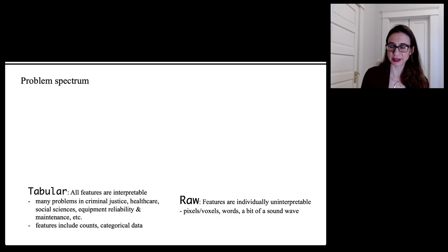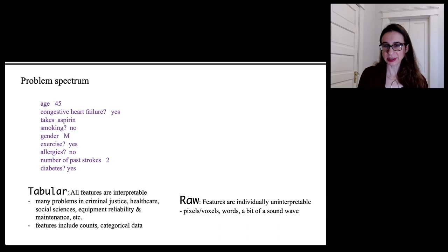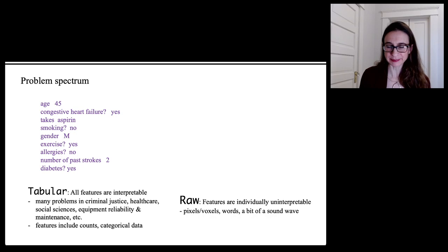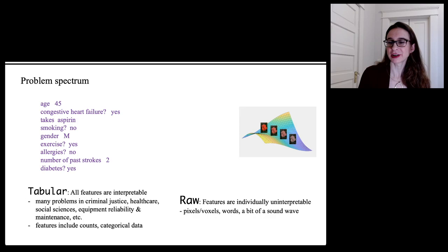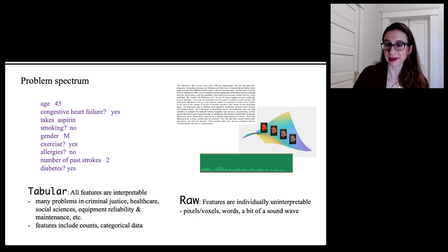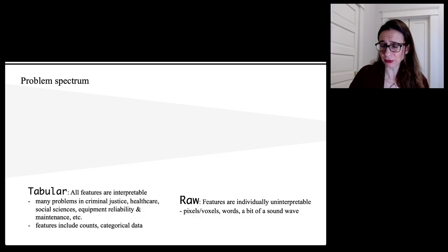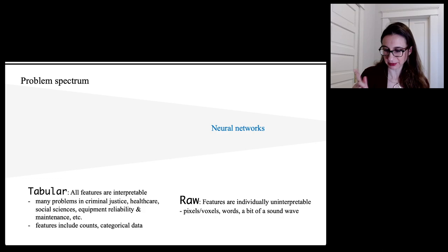There are really two types of datasets: datasets with tabular data and datasets with raw data. Tabular data is where all the features are interpretable and you can understand exactly why each feature is a potential predictor of the outcome. Raw data, in contrast, includes things like image data — where if you adjust one pixel, you're no longer on the manifold of natural images. Images, sound waves, text — these are very different. For raw data, the only technique working right now is really neural networks, but that doesn't mean they can't be interpretable.